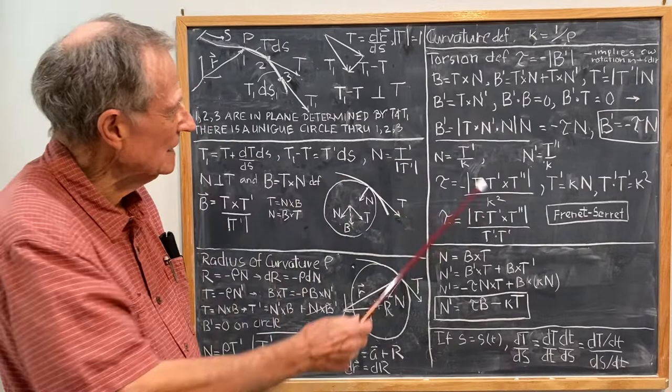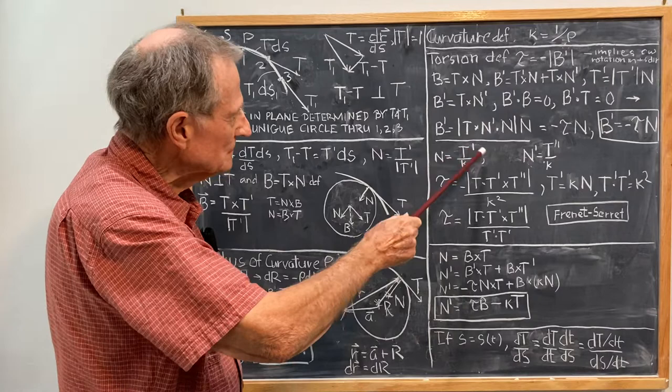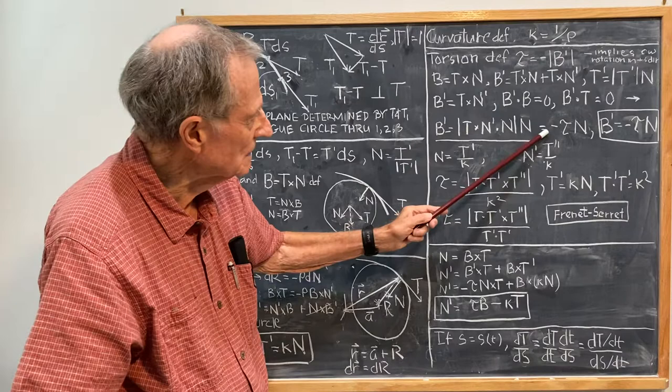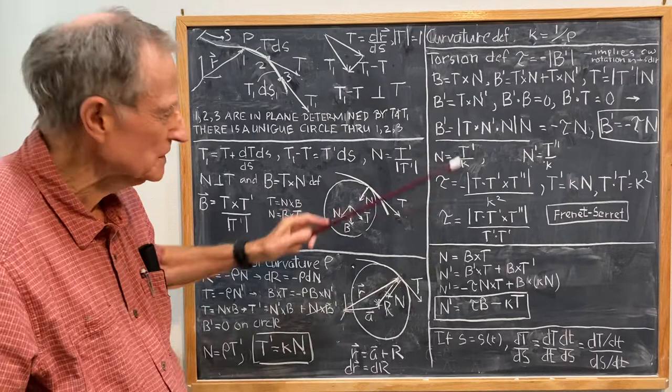So we have finally, B prime is equal to T cross N prime in the N direction, so that B prime is equal to T cross N prime dot N, the component of T cross N prime dot N times N. And that's B prime is equal to minus τN, which is one of the Frenet-Serret formulas which I've outlined there.